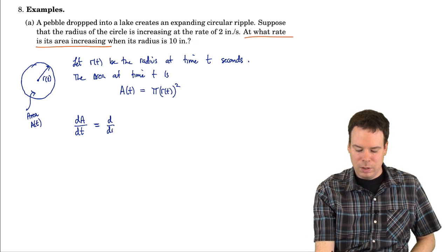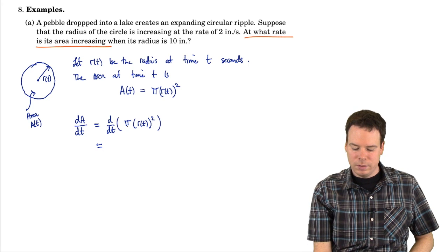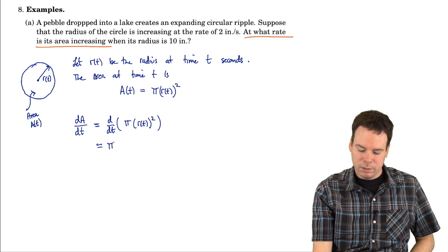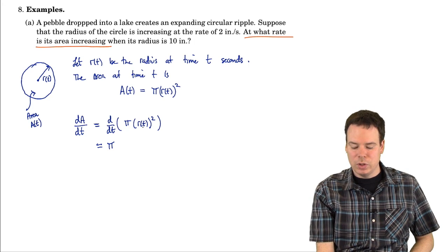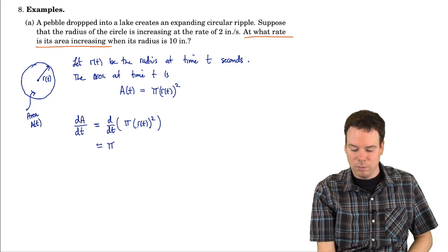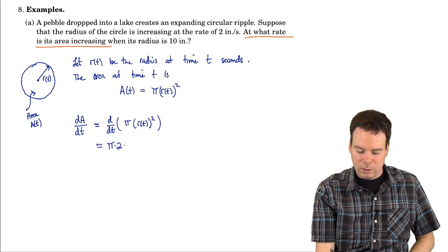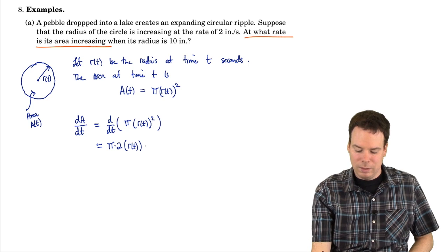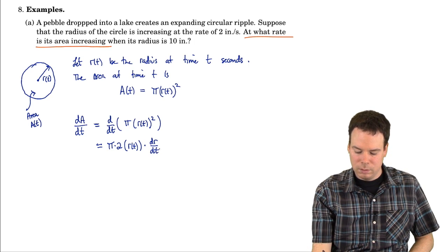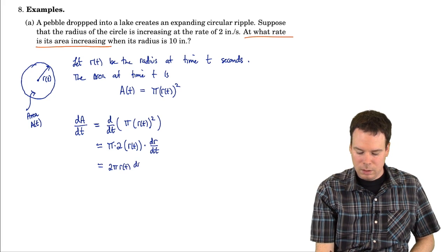In general, it's going to be d/dt of the area expression. Now, this derivative is a constant times a composition, so the constant can come out of the derivative. Then we're differentiating a composition — the r function is the inside function, the square is the outside function. By the chain rule, it's 2 times the inside function — that's the derivative of the outside evaluated at the inside — times the derivative of the inside function. So this is 2π r(t) · dr/dt.